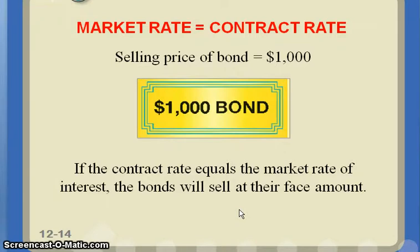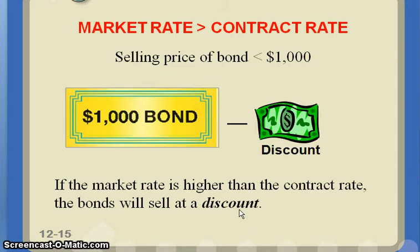If the market rate is the same as the contract rate — the rate stated on your bonds — and you're selling a $1,000 bond, then you're going to get $1,000 when you sell that bond. Where this gets a little fuzzy is: what if the rate on my bonds is 5% but other similar bonds in the marketplace are actually paying 8%? Why would anybody want to invest with me? Why would anyone give me their money to earn 5% when they could earn 8% elsewhere? The way I make this more attractive is I issue my bonds at a discount.